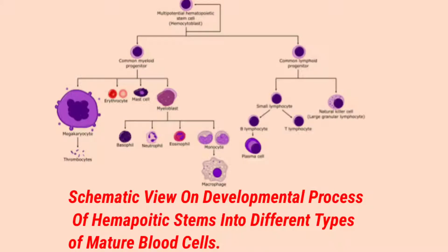We need a flowchart showing how hematopoietic stem cells (HSC) give rise to the common myeloid progenitor and common lymphoid progenitor. From the common myeloid progenitor, we have myeloblasts, erythrocytes, and thrombocytes. Myeloblasts give rise to basophils, neutrophils, eosinophils, and monocytes.